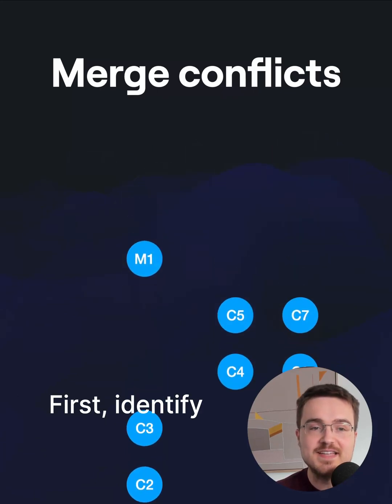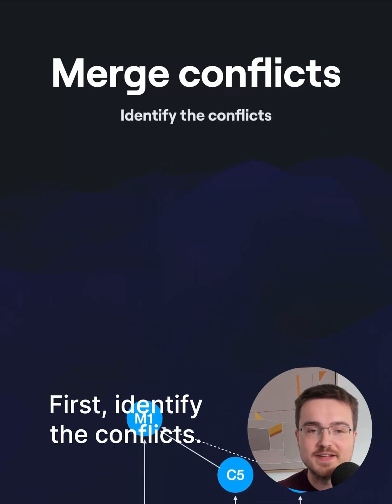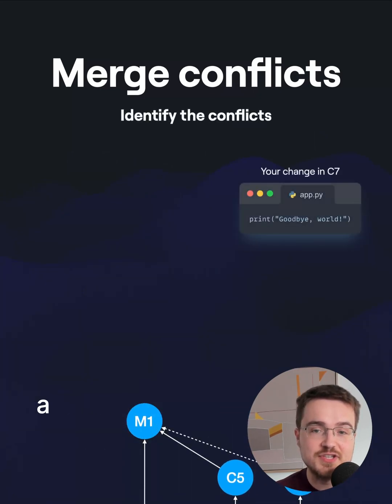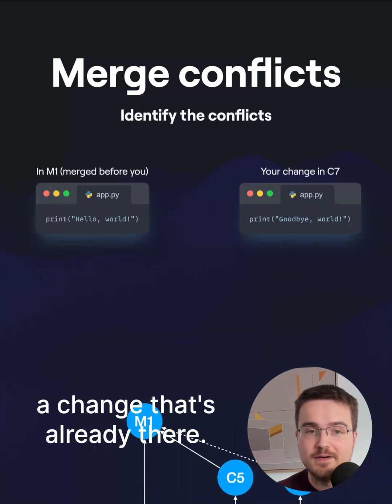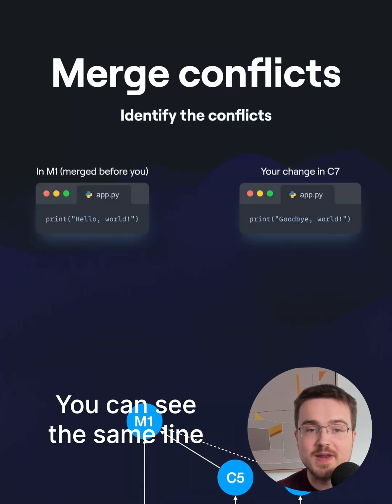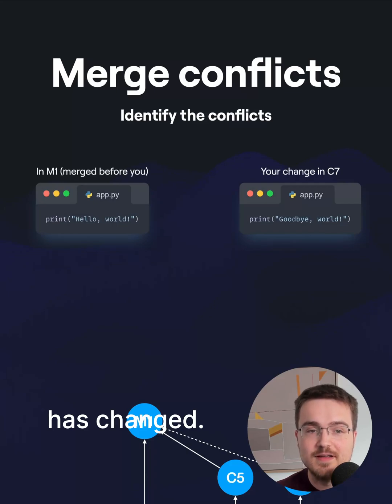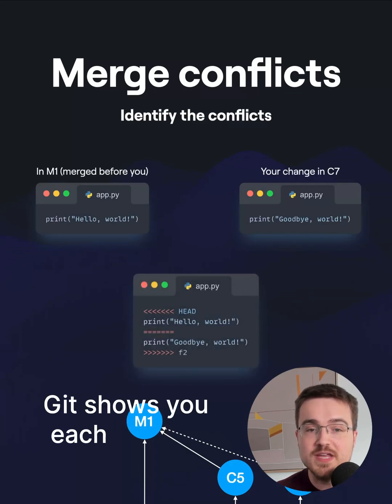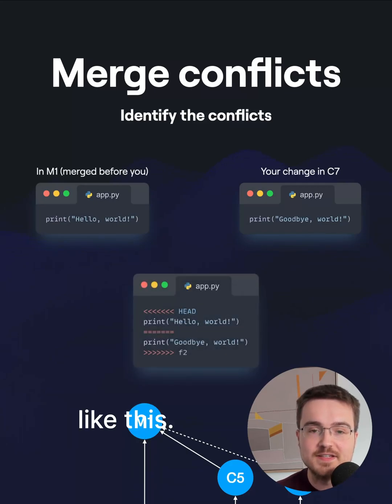First, identify the conflicts. Here's your change, and here's the change that's already there. You can see the same line has changed. Git shows you each conflict like this.